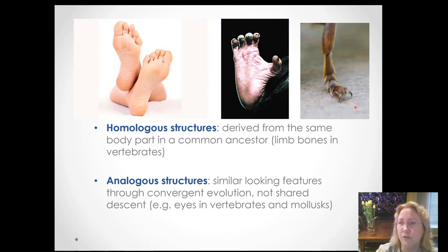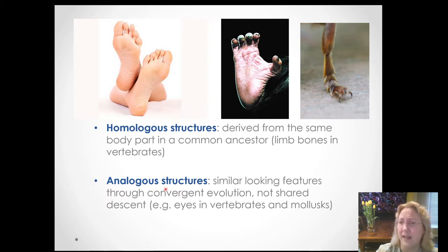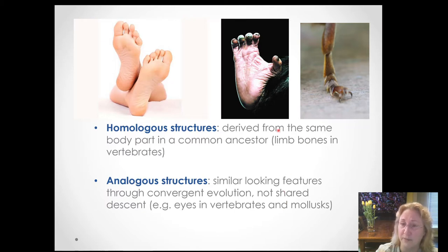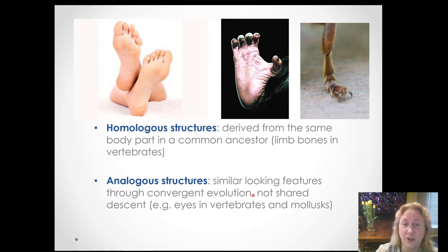If we compare a human foot to a fly foot, flies also use their feet for walking — similar selective pressure — and they sort of superficially look like a human foot. However, any similarities are analogous and are the result of convergent evolution. The same selective pressure of needing to be useful for walking created a roughly similar overall structure. Our common ancestor with flies would have been before the Cambrian explosion — at least 600 million years ago — and that ancestor did not have feet or walk. So any superficial similarities are the result of convergent evolution, not shared descent.